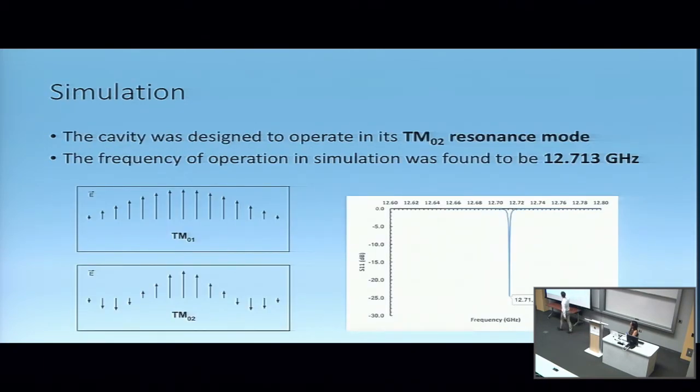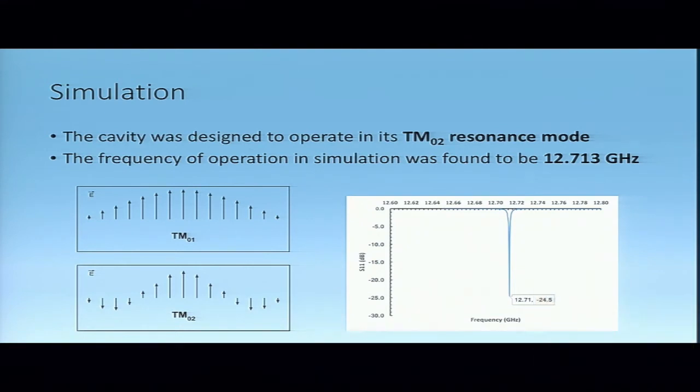My cavity was meant to be operated in the TM02 mode, which means transverse magnetic, and it's the second transverse magnetic mode. This is looking down at the cavity if you cut it and you're looking at a cross-section. In TM01, you can see that the vector E field is all pinned in the same direction, and the peak field strength is in the middle, which would be where the beam tube comes into the cavity.